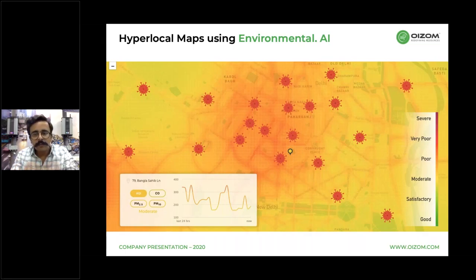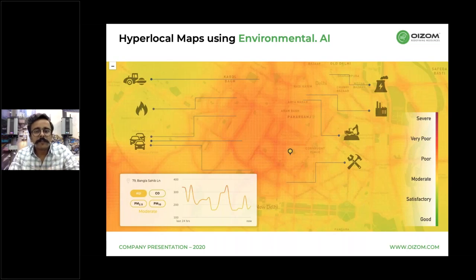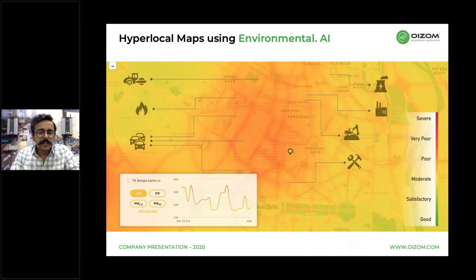We place our air monitoring network in the city and on top of real-time pollution data, we integrate secondary data sources like satellite data, meteorological data, traffic data, and pollution source inventory. Thereafter, we perform dispersion modeling at the city scale every single hour. The heat map shown is of Delhi, where 6.5 lakh data points are predicted every single hour at a resolution of around 100 by 100 meters, and a pollution map is produced in real time. This environmental AI is a real-time solution, ensuring red-flagging and decisive actions are made very efficient.